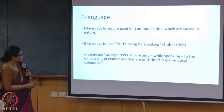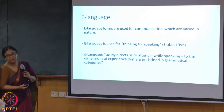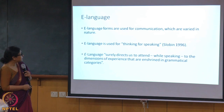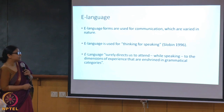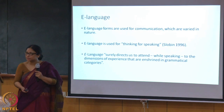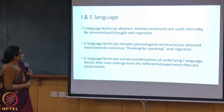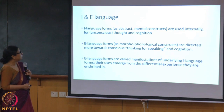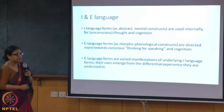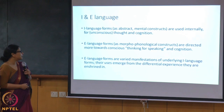Slobin does not make an I/E language distinction — he just has language and doesn't believe in I language. He says: 'E language surely directs us to attend while speaking to the dimensions of experience that are enshrined in grammatical categories.' So you have this extra dimension of experience that comes in when you have E language. So: I language forms are abstract mental constructs used internally for unconscious thought and cognition. E language forms as morphophonological constructs are directed towards conscious thinking for speaking.